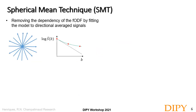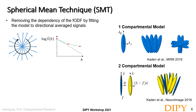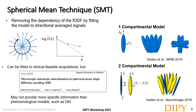Another set of clinically feasible models are the Spherical Mean Techniques. Like mean signal DKI presented yesterday, this model removes the dependency on the fiber ODF by fitting models to the b-value dependency of signals averaged across directions. As an attempt to estimate the anisotropy of compartments independent of dispersion — also known as microscopic anisotropy — a one-compartmental SMT model was proposed, representing all tissue components by constant axial and radial diffusivities. This was later expanded to an intra- and extracellular two-compartmental model with all diffusivities fixed to the intrinsic diffusivity lambda. However, a recent study from the speaker's lab showed that due to these constraints, SMT models do not provide more specific information than DKI, and thus should not be used as microstructure models but just as phenomenological models.